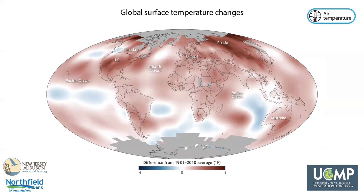The increase in greenhouse gases in our atmosphere due to human activities has increased Earth's average temperature, as seen here. This map compares global surface temperatures in 2017 to the 1981 to 2010 average temperatures. The red parts of the map indicate that the largest changes in temperature happened at high latitudes in the northern hemisphere and that most of the planet is warming. Note that because heat is redistributed by atmospheric and oceanic circulation patterns, slight cooling is observed in some regions.